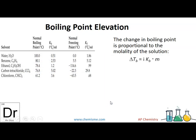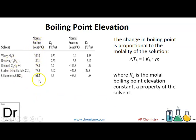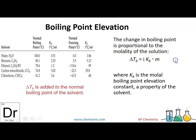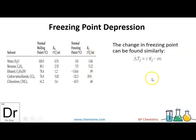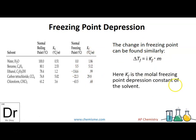The boiling point elevation depends on what you're trying to change. There's a list of substances and their Kb values — the boiling point constant — and it also depends on how much you add. The formula uses molality (m) — not molarity, because we don't want a temperature-dependent concentration when we're changing the temperature. The more molality you have, and the more ions you have, the more change in boiling point you'll get. Similarly for freezing point depression, the same formula applies: delta T equals Kf times molality times the Van't Hoff factor. The more concentrated the solution and the more ions it has, the more the freezing point will decrease.